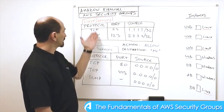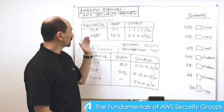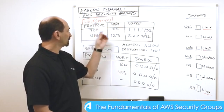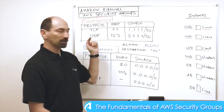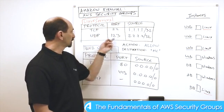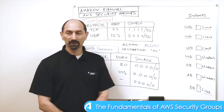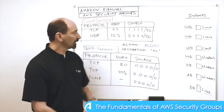Here we see some rules: TCP on port 22, so SSH, and UDP on port 123, so NTP.